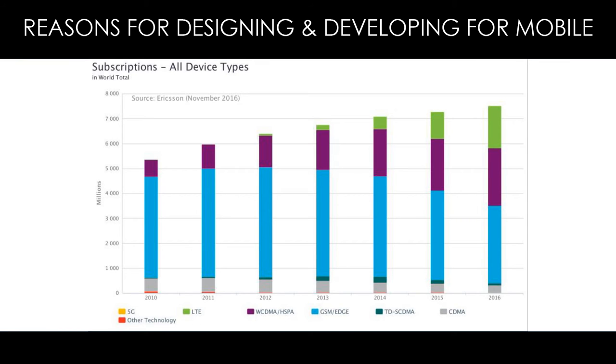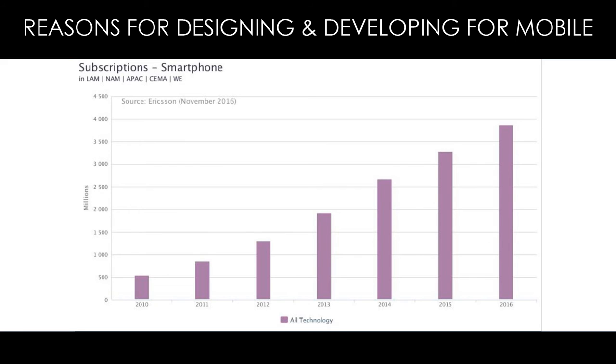There are many reasons for creating mobile learning instead of just offering your e-learning for desktop users. The obvious one is that lots of people have smartphones. According to the Ericsson Mobility Report, the number of mobile subscriptions now exceeds the world's population, and smartphone subscriptions is nearly at 4 billion.